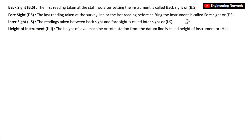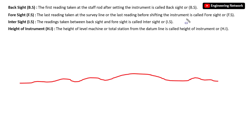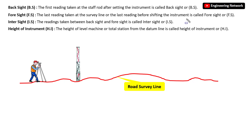Now let me take an example to show what back sight, foresight, intermediate sight, and height of instrument are. Let's assume that this is the road survey line. Here I have installed the instrument which is the level machine, and here I have installed the staff rod. The first reading that I will take from the level machine at the staff rod will be considered the back sight or BS.